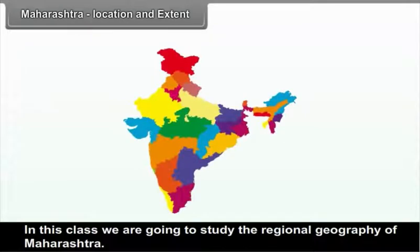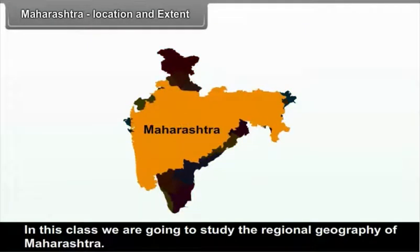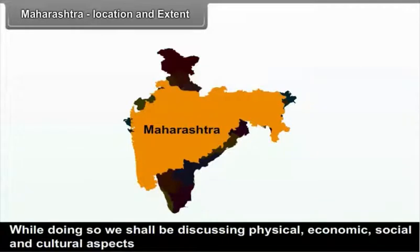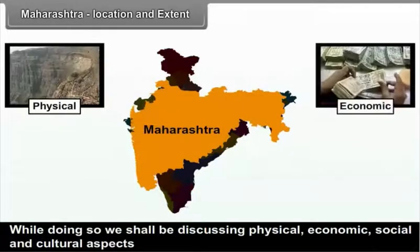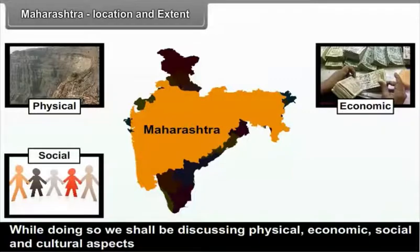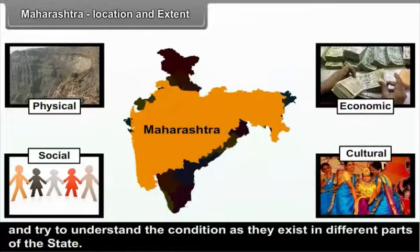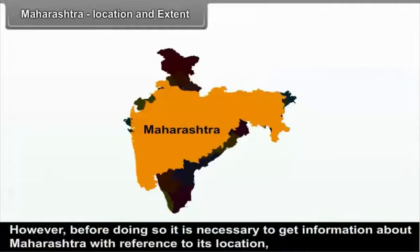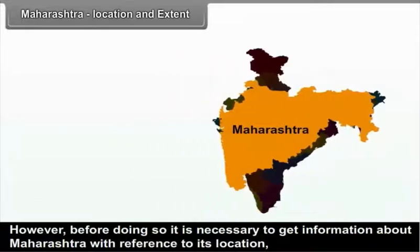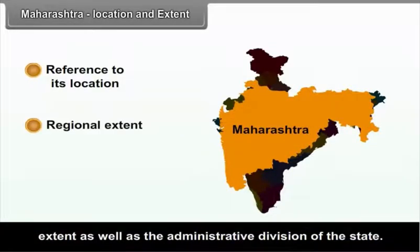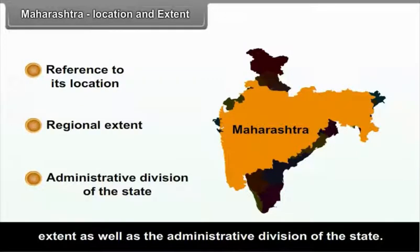In this class, we are going to study the regional geography of Maharashtra. While doing so, we shall discuss physical, economic, social and cultural aspects and try to understand conditions as they exist in different parts of the state. However, before doing so, it is necessary to get information about Maharashtra with reference to its location, extent, as well as the administrative divisions of the state.